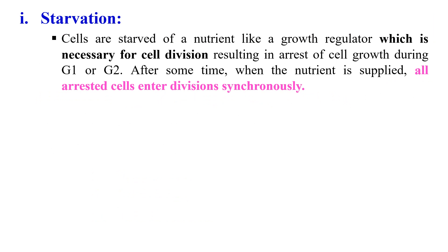In the starvation method, a nutrient — such as a growth regulator required for growth — is withheld. Cells become starved of that particular nutrient and are stopped at a specific stage. When the nutrient is added back, all the cells, having been arrested at the same stage, enter the next division cycle synchronously.